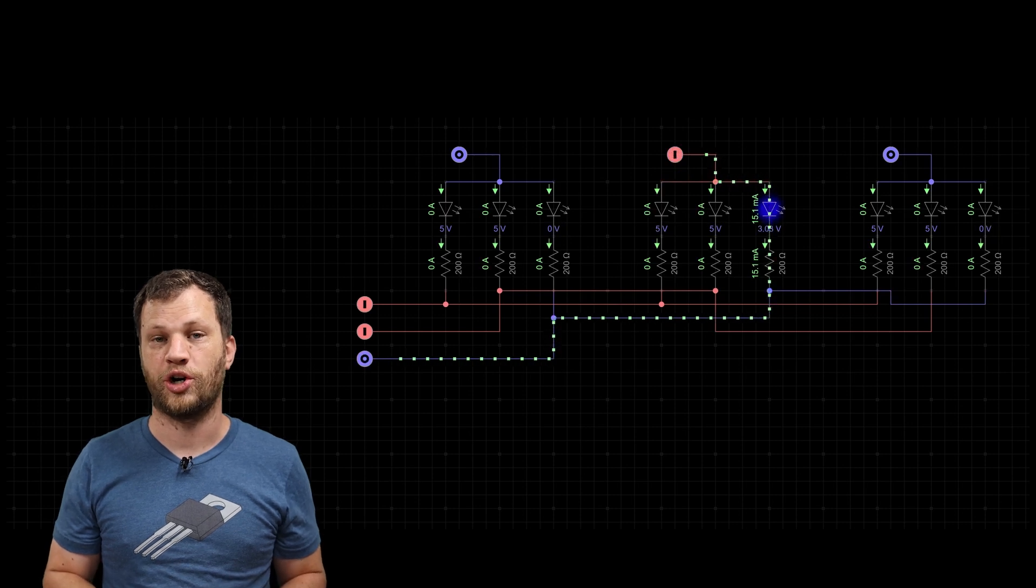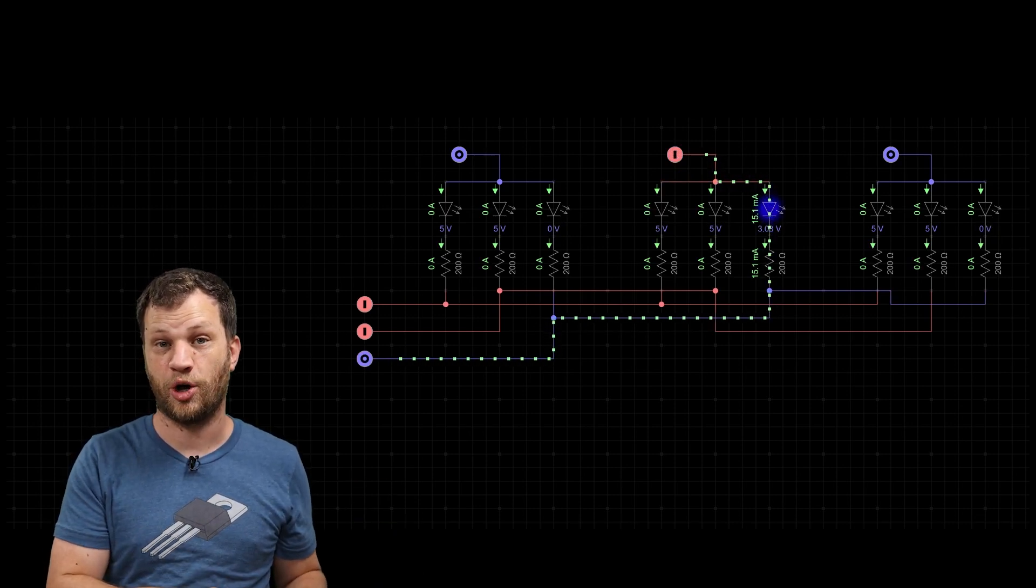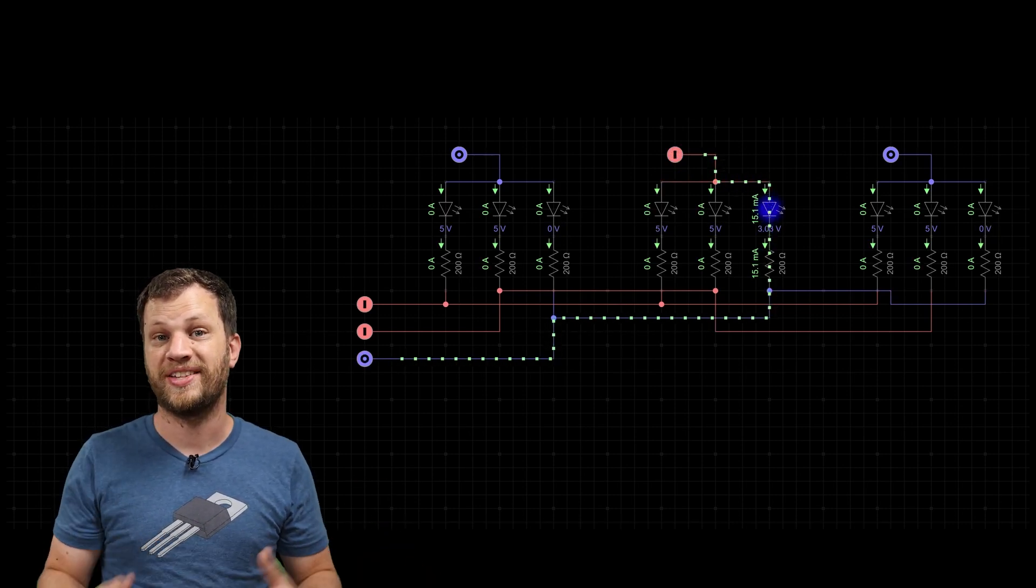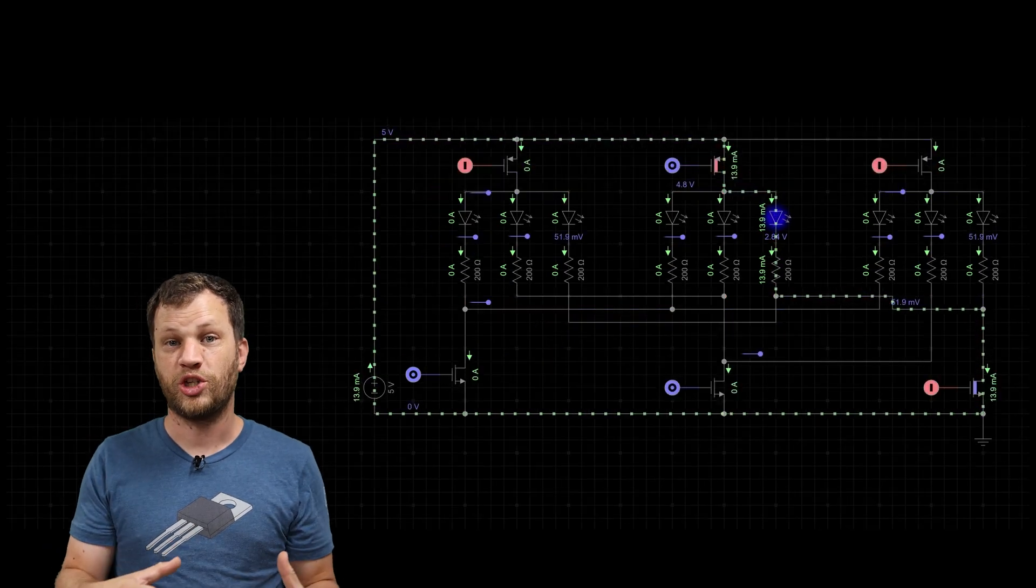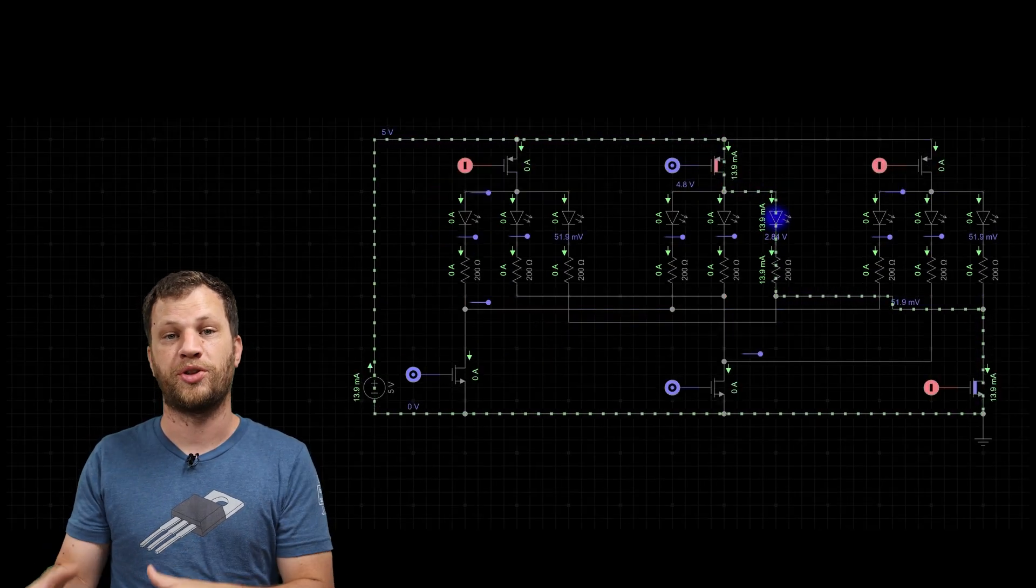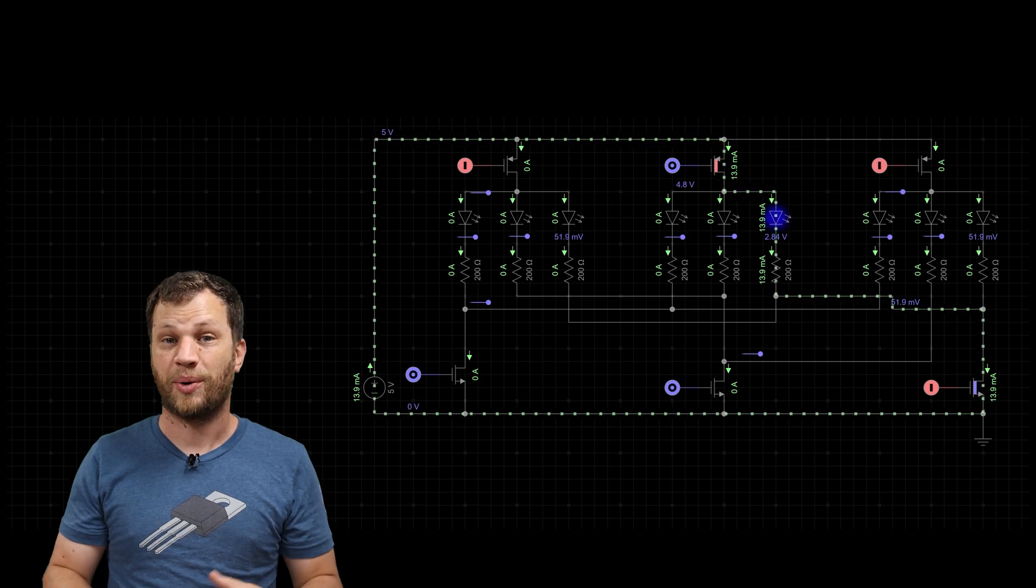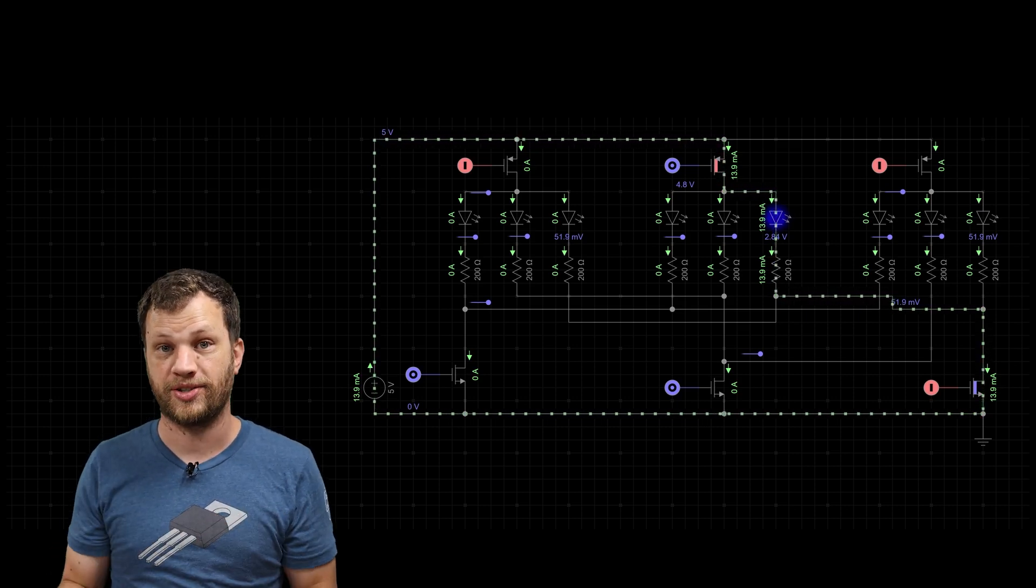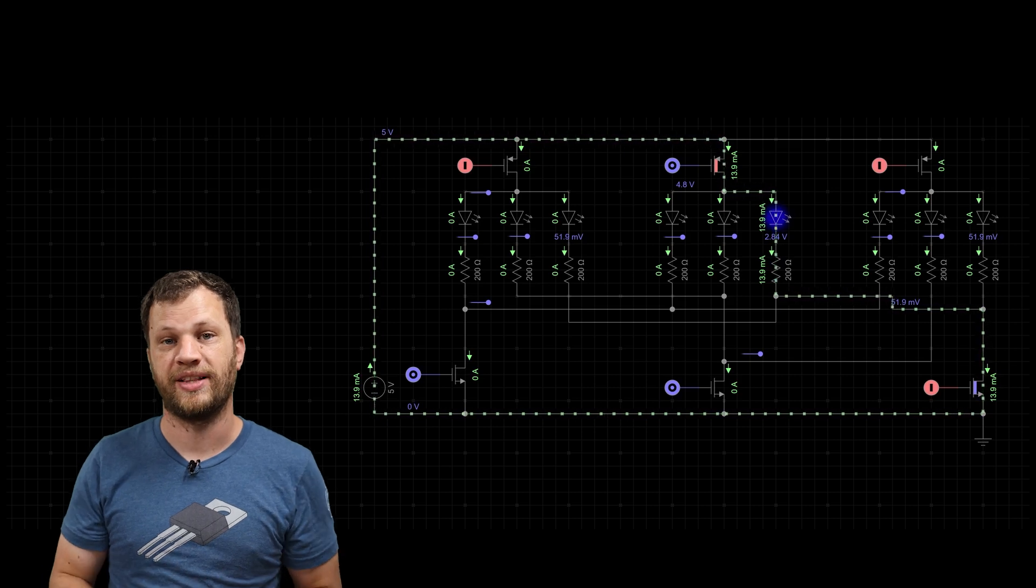In this example I'm using very low current LEDs so that the GPIO pins themselves can source and sink all of the current. If I was going to use higher current LEDs or some other component that draws more current, I would obviously need to include a MOSFET or some other transistor in the circuit to do all of the heavy lifting.